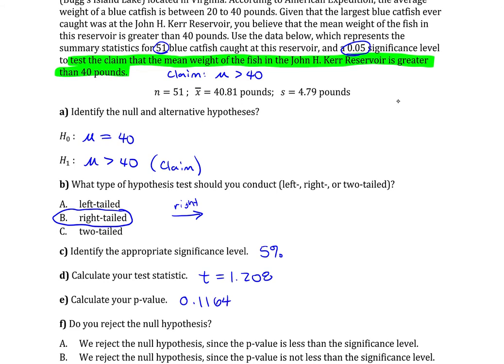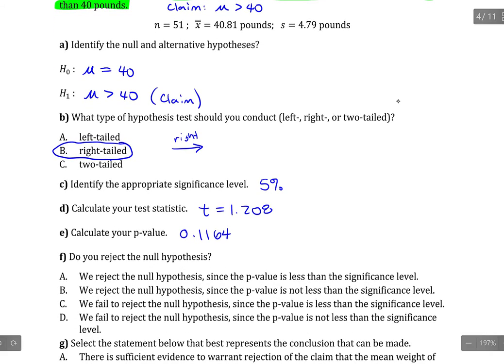And the next thing is to decide if we are going to reject or fail to reject the null hypothesis. And in order to make that decision, we compare the value, the p-value to the alpha level. Now the alpha level is 5% and the p-value is 11.64%. So the p-value is bigger than alpha. And the rule that I keep in mind is if p is low, the null must go. So if your p-value is less than alpha, you reject the null hypothesis. But in this case, p-value is greater. So we fail to reject the null hypothesis.